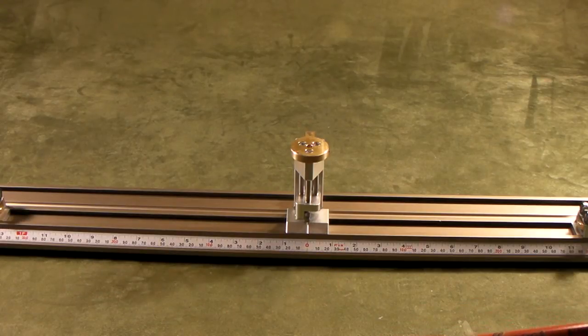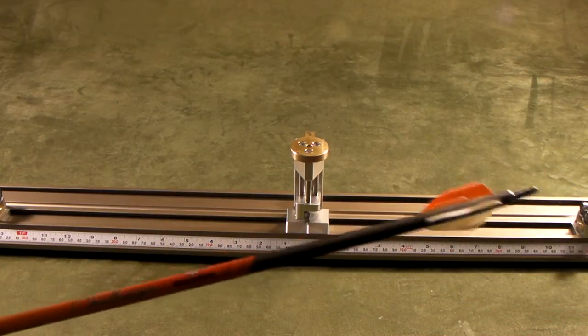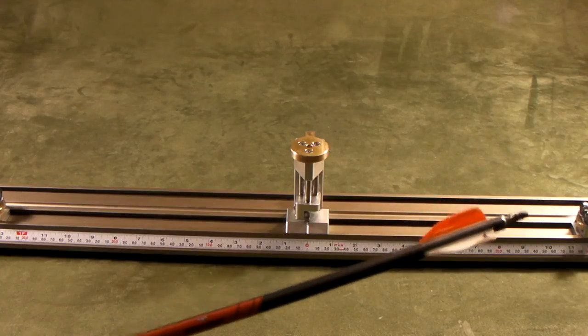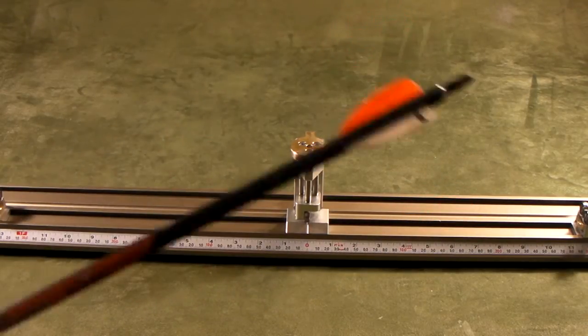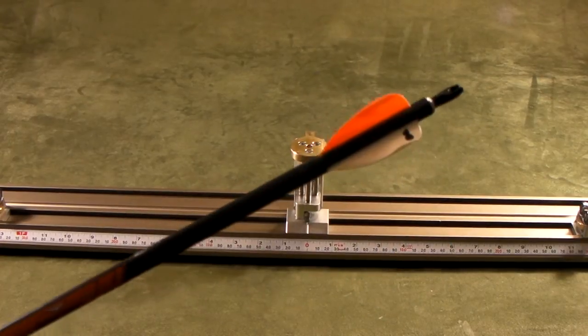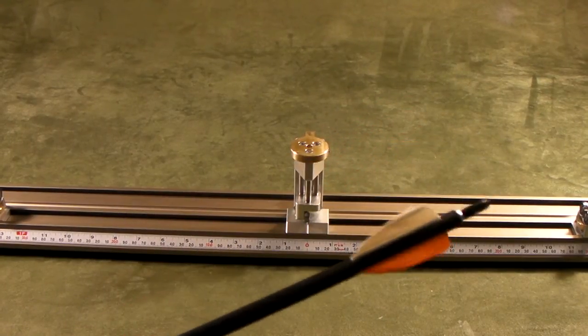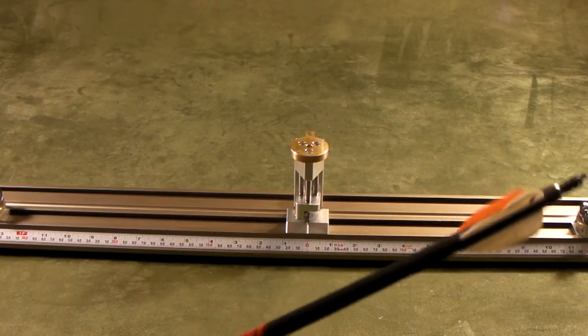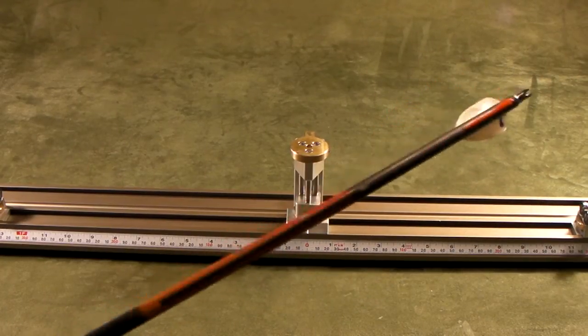Imagine this: you've got a 32-inch arrow and you cut the arrow, say, 3 inches. The spine can move. Let me rephrase - it's not spine, the natural first bending point can actually move more than 40 to 50 degrees. So how do we find an arrow's natural first bending point?